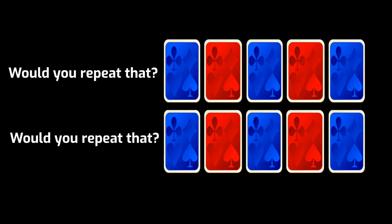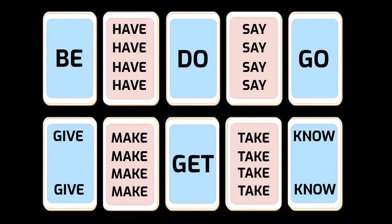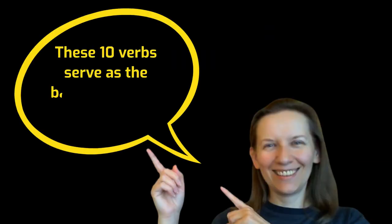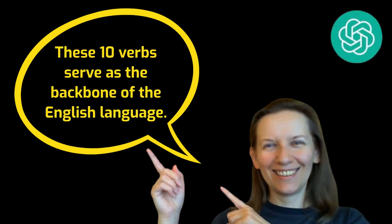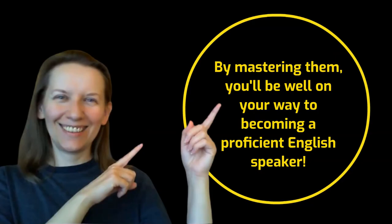Be, Have, Do, Say, Go, Get, Make, Take, Give, Know. These ten verbs serve as the backbone of the English language. By mastering them, you will be well on your way to becoming a proficient English speaker.